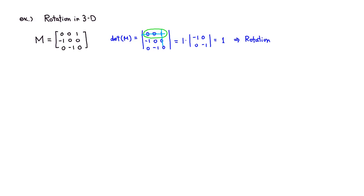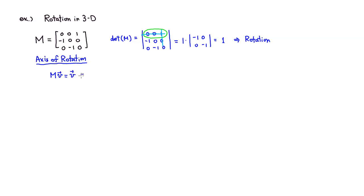Once we know it's a rotation, let's find the axis of rotation. To find the axis of rotation, all you have to do is find the fixed point. When you rotate something and you're sitting on the axis, you're not going to go anywhere. So you want to solve M·v = v to find the vector v.